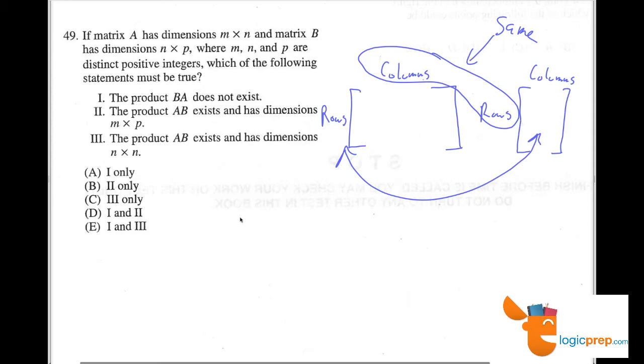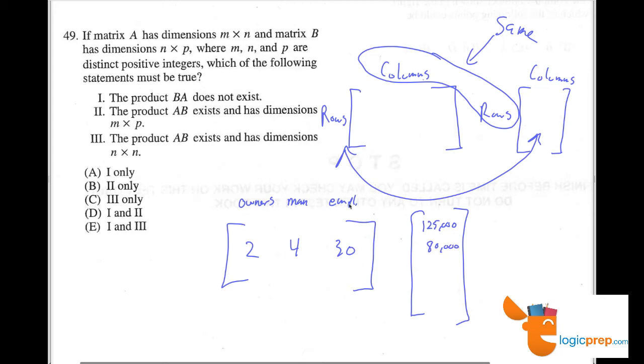To give you an example, if we have a company with owners, managers, and employees, and we have two owners, four managers, and 30 employees, and we're going to pay them all different amounts of money. The owners will get $125,000, the managers will each get paid $80,000, and the employees will each get paid $50,000.